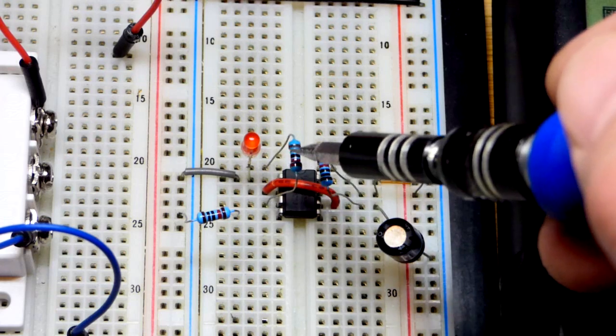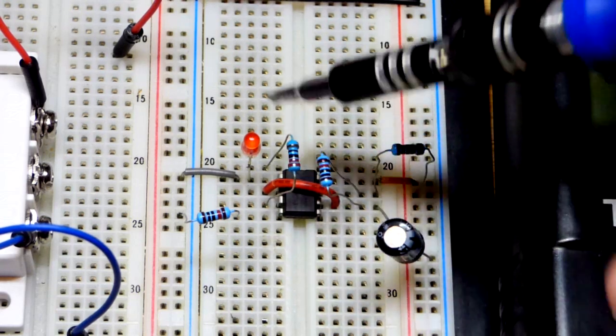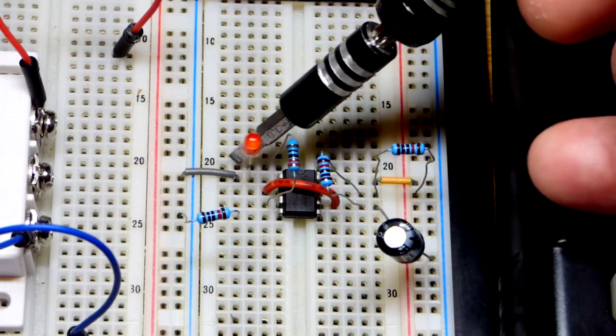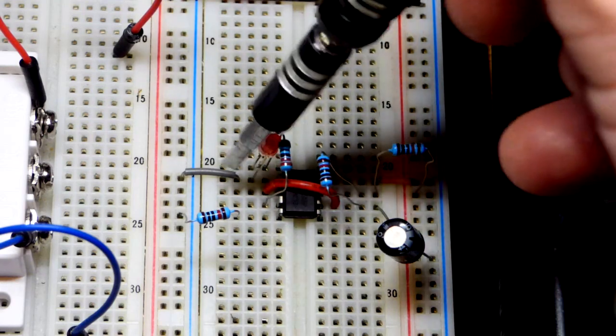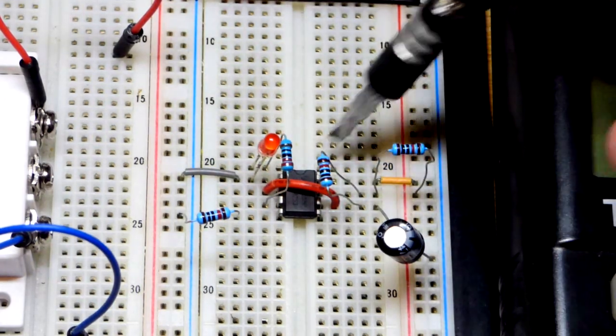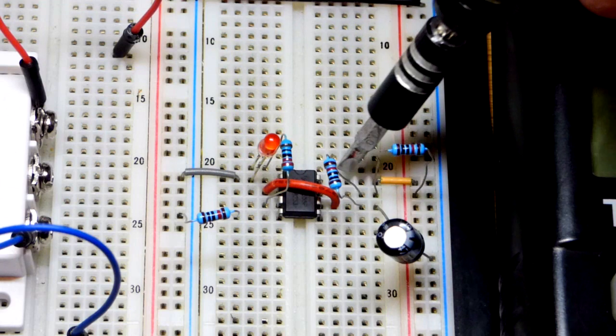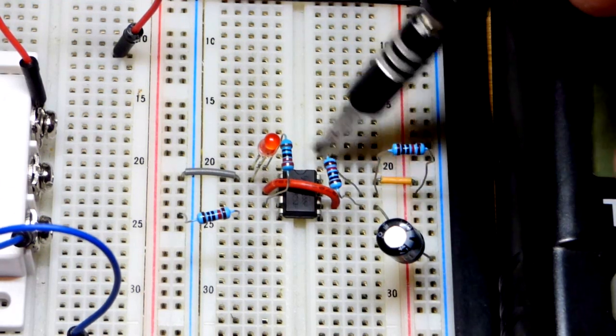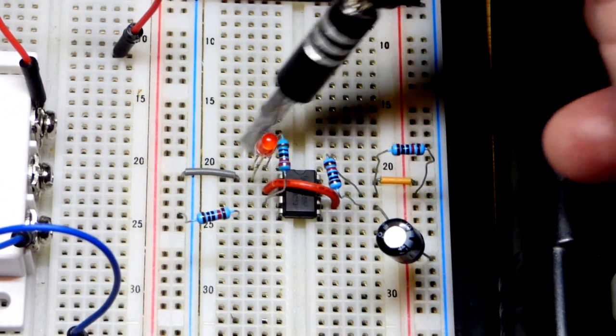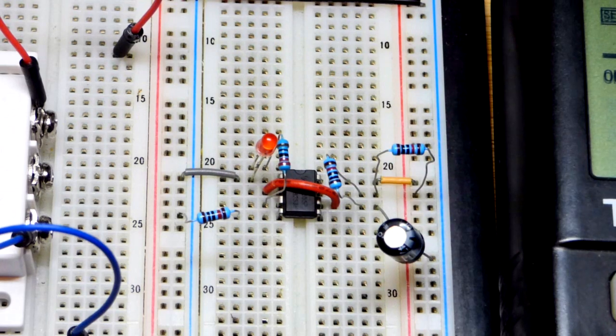Now we've got the load here. 220 ohm resistor since we're using 5 volts, coming to the long lead, the anode of the LED up there. Short lead, the cathode going to ground. We also have to power the integrated circuit. The top pin on the right, pin 8 to positive supply. Pin 1, the top pin to the left to the negative side of the power supply.